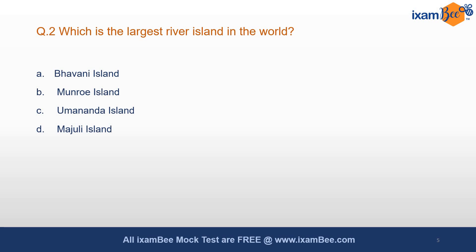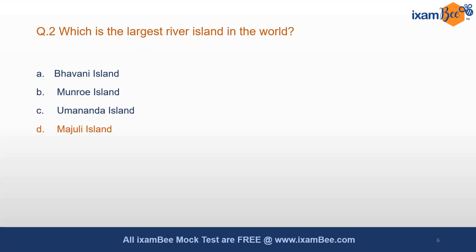Which is the largest river island in the world? The answer is Majuli Island — a very famous island located in Assam, in the river Brahmaputra.